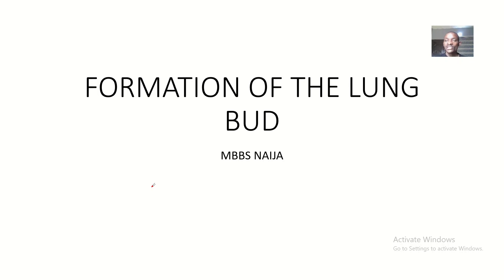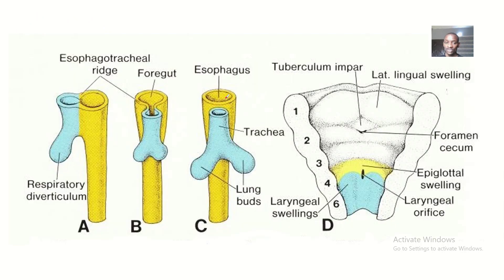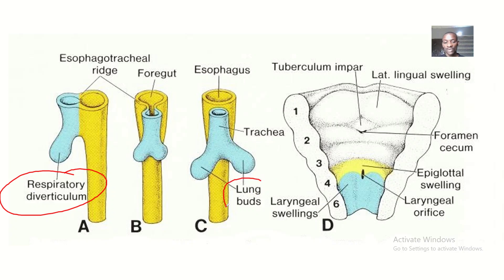Another sweet story of embryology development is that of the lung buds — the primordia of the lungs. How are the lung buds formed? This is MBBS; subscribe to the channel if you haven't. We'll focus on the formation of the lung buds. You can observe that there is a respiratory diverticulum, which also has many other names, such as the laryngotracheal diverticulum. This respiratory diverticulum is what gives rise to the lung buds.